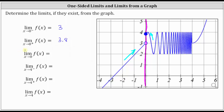Next, we have the limit of f of x as x approaches zero. For this general limit to exist, we must be approaching the same function value from the left and right of zero. We can see from the first two one-sided limits this is not the case. Therefore, the limit of f of x as x approaches zero does not exist, and we enter D.N.E.